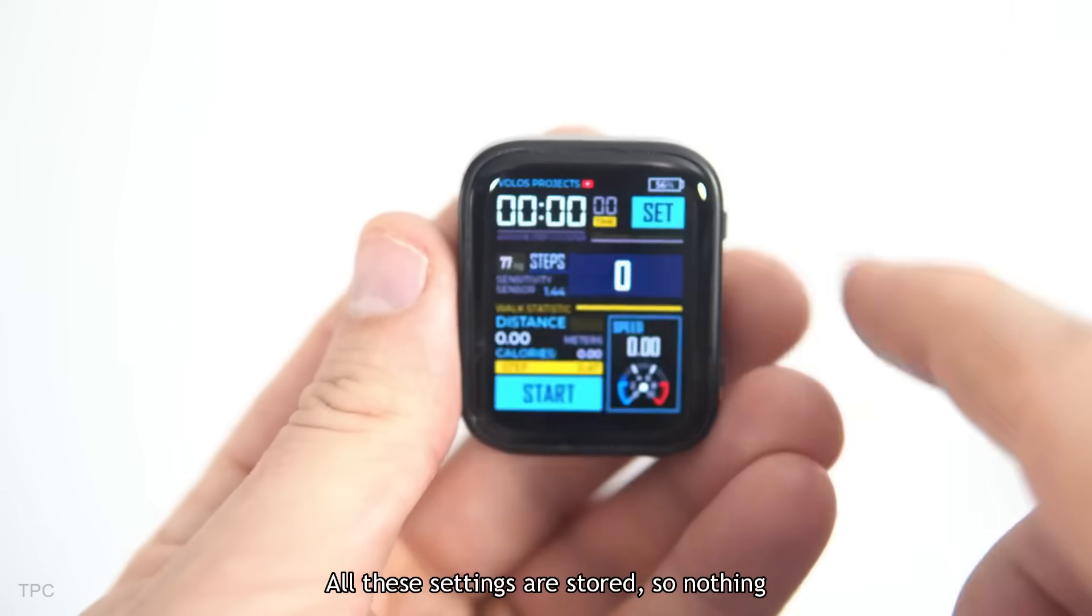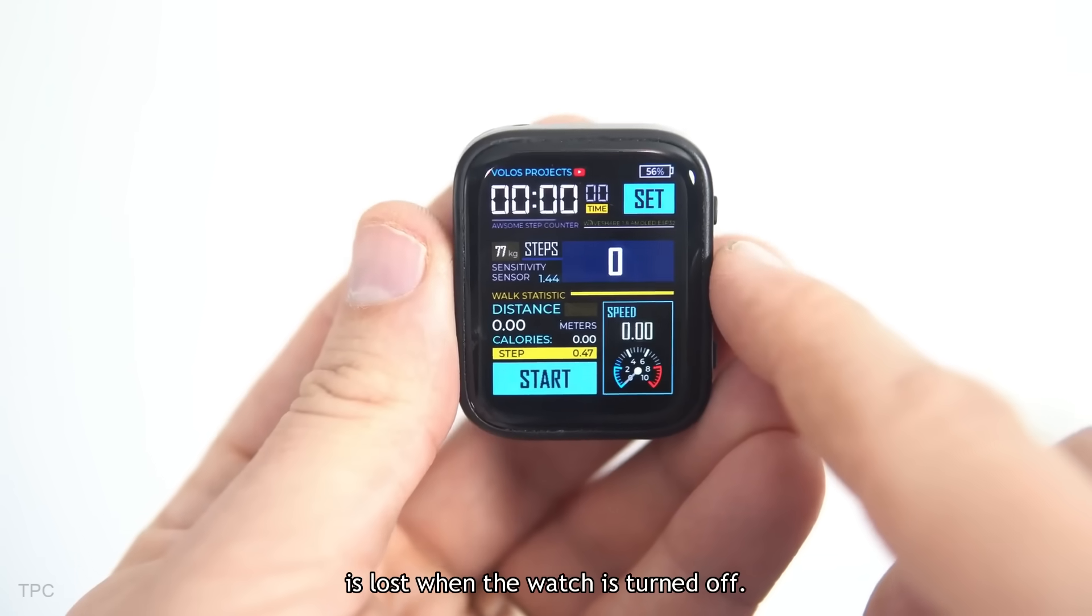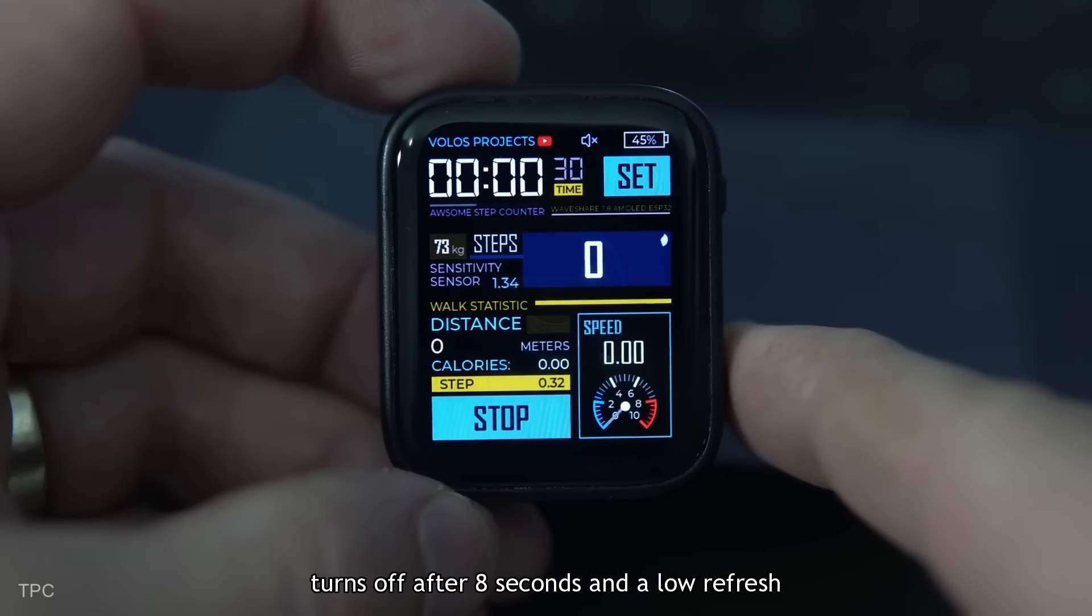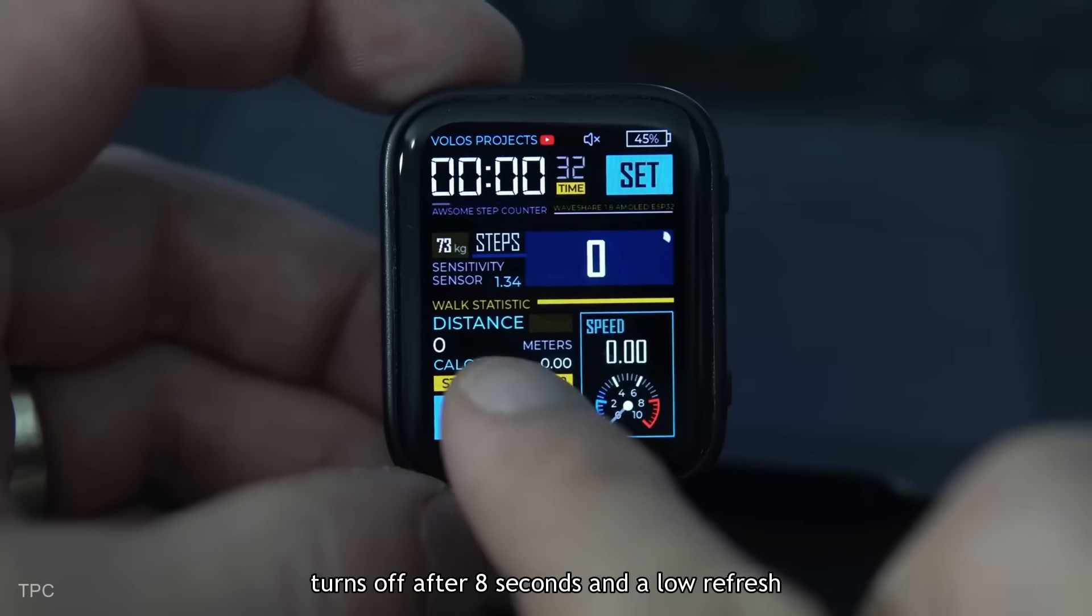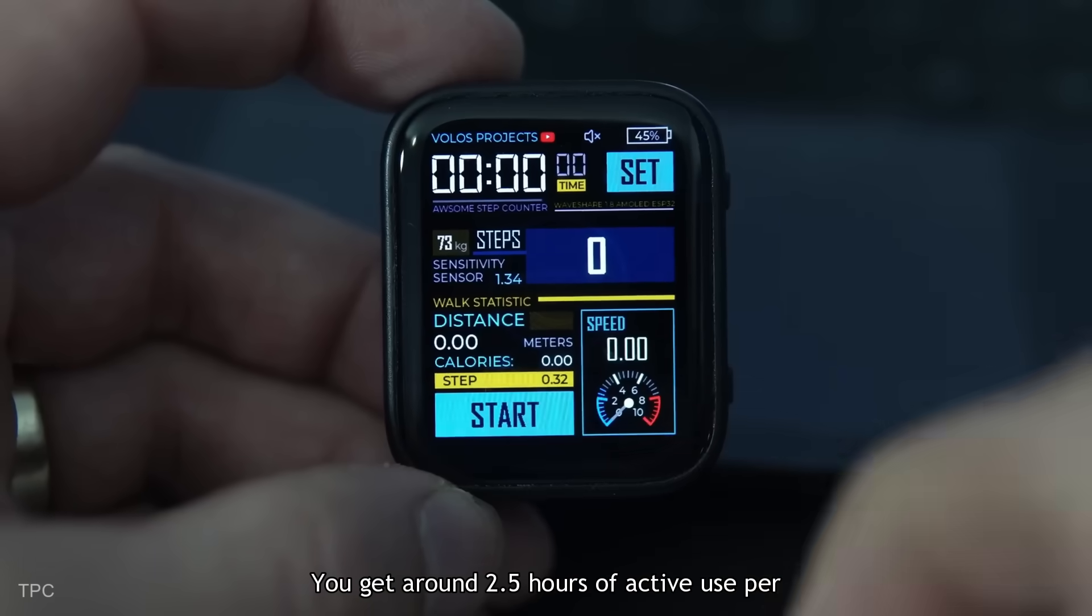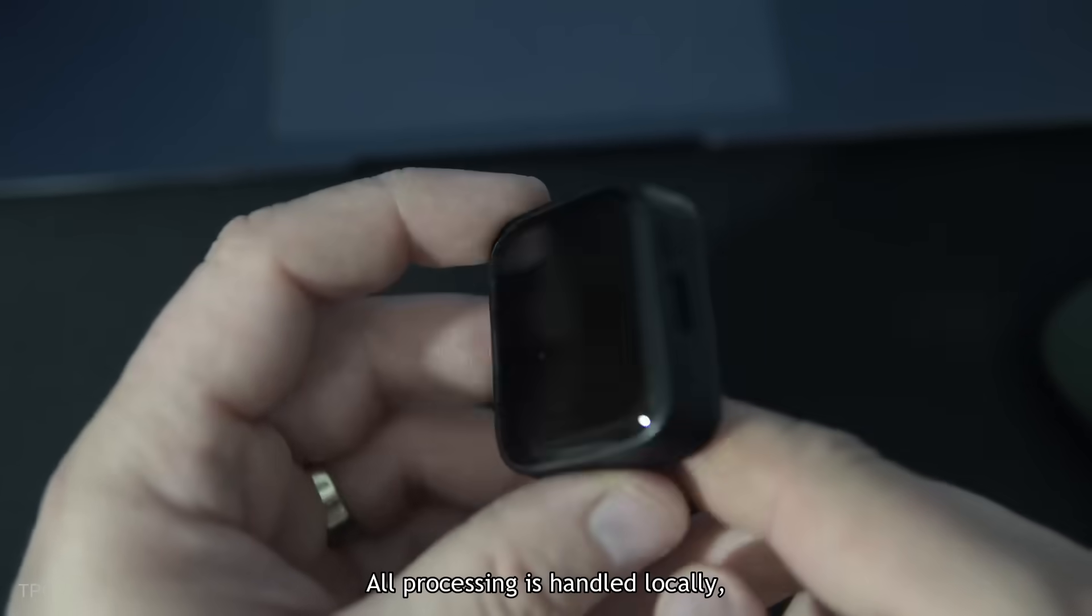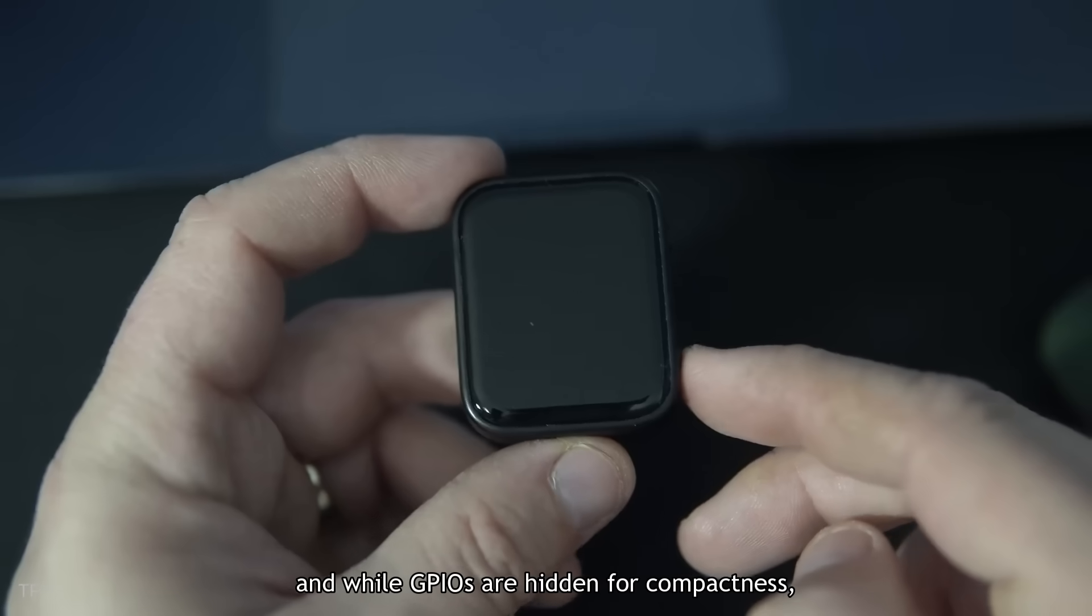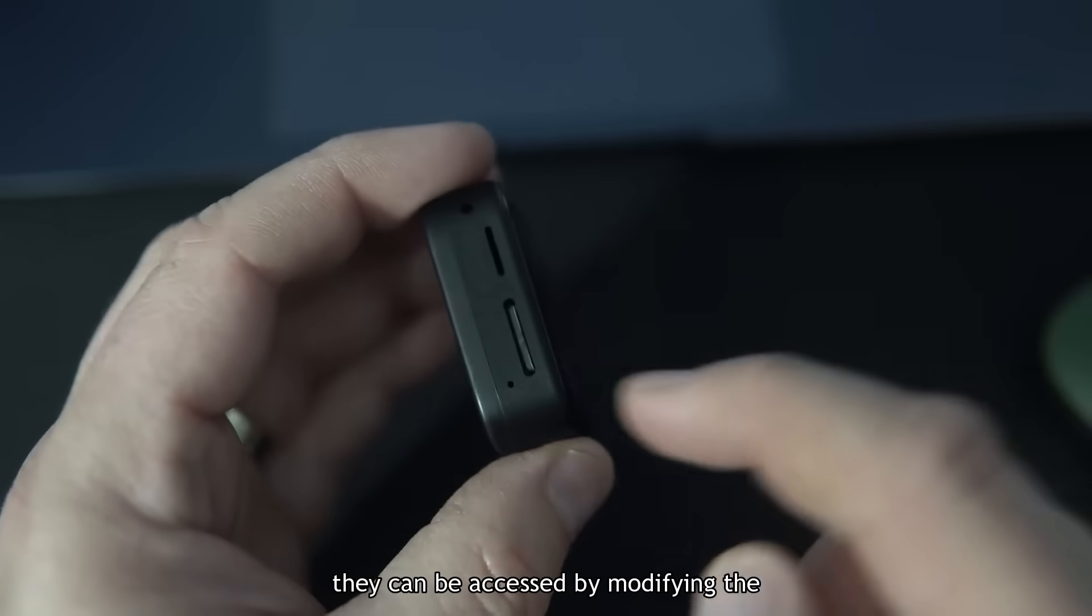All these settings are stored, so nothing is lost when the watch is turned off. It's power-efficient, with a screen that turns off after 8 seconds and a low refresh rate to save battery. You get around 2.5 hours of active use per charge. All processing is handled locally, and while GPIOs are hidden for compactness, they can be accessed by modifying the enclosure if needed. Number 3.